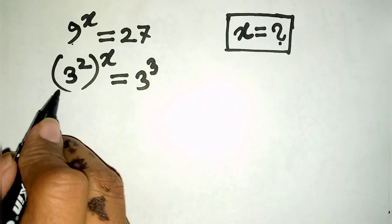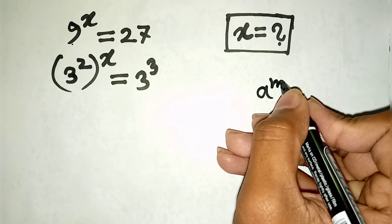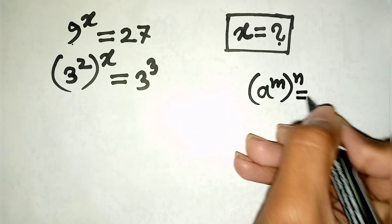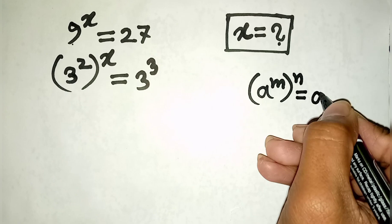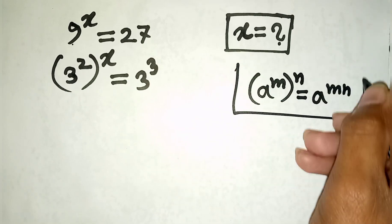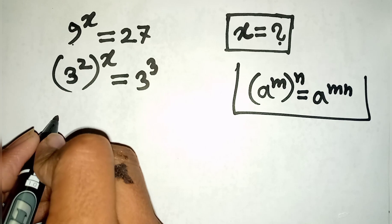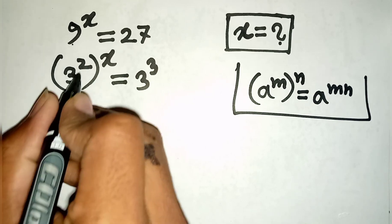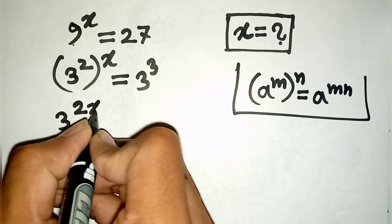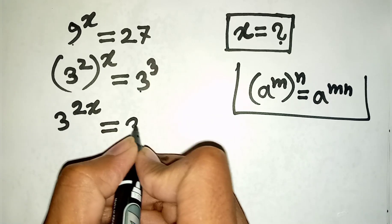Now here we can apply the formula: a power m, bracket power n, is equal to a power mn. So according to this formula we can write 3 power 2 times x, which is 2x, is equal to 3 power 3.